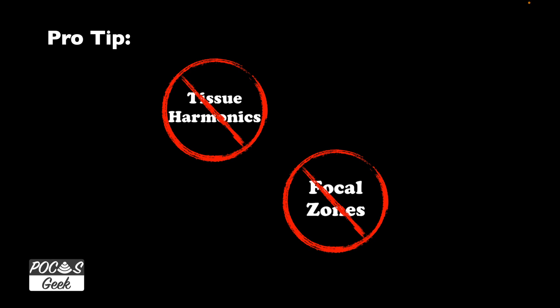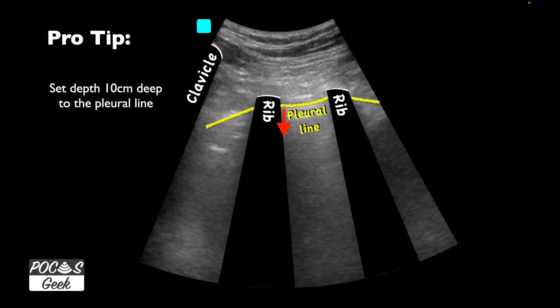When performing the study, turn off tissue harmonics. If you have a true lung setting on your probe and machine, great — use that, as it will already turn off tissue harmonics. Otherwise, use an abdominal setting, turn off tissue harmonics, and turn off all focal zones if you can. If you must keep one focal zone, place it at the pleural line. Because a B-line has to go to the far field, you want adequate depth — I personally recommend 10 centimeters deep to the pleural line. If the pleural line is 3 cm deep, set the depth to 13 cm, and adjust based on body habitus.